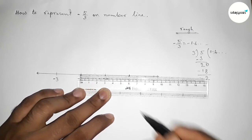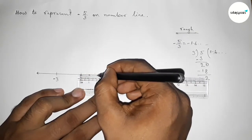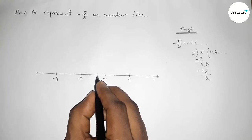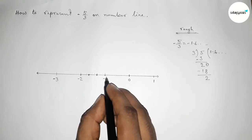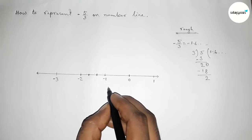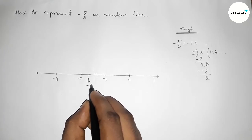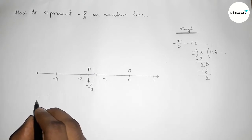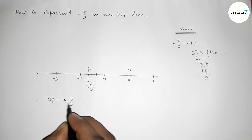Dividing 30 by three, the length of the first part is 10 and the second part will be 20. By this way we divide the length between minus one and minus two into three equal parts approximately. So this point is minus three by three, this one is minus four by three, and this one is minus five by three on the number line. Taking point O at zero and point P at minus five by three.